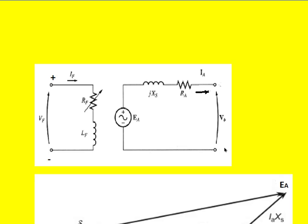If a load is connected across the terminals of the stator, a current will flow through it. The current that flows from the single phase of the stator equivalent circuit is called the armature current or stator current, represented by IA. It flows through the circuit and reaches the load.